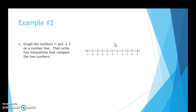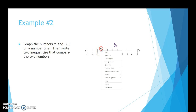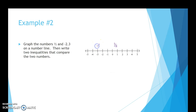Then negative 2.3 — that's going to be between negative 2 and negative 3. Negative 2.5 would be directly halfway, so negative 2.3 would be a little less than halfway. I'll put a point right there and label it negative 2.3.